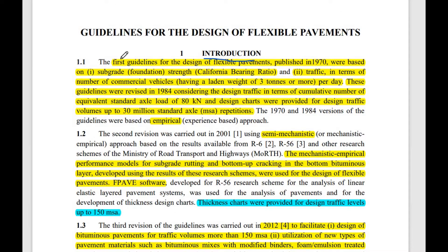In point 1.1, the IRC 37 code for the design of flexible pavement was first published in 1970. The design parameters at that time were: first, the subgrade strength expressed as the California Bearing Ratio (CBR), and second, the traffic in terms of commercial vehicles having a weight of 3 tons or more.